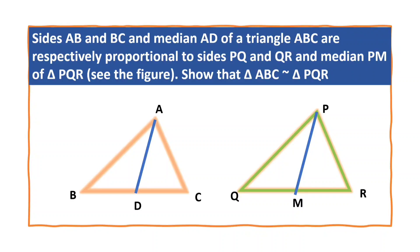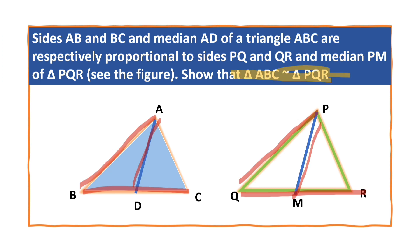It is given that AB and BC and median AD of triangle ABC are proportional to PQ, QR and median PM of triangle PQR respectively. Show that triangle ABC is similar to triangle PQR.